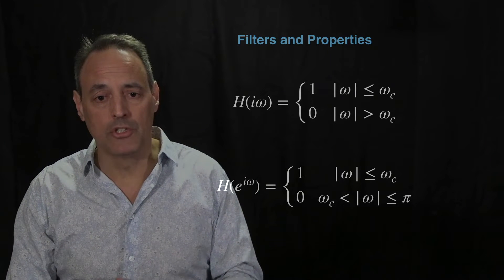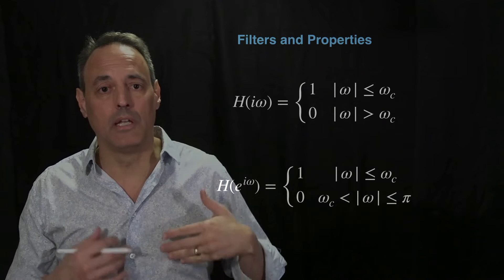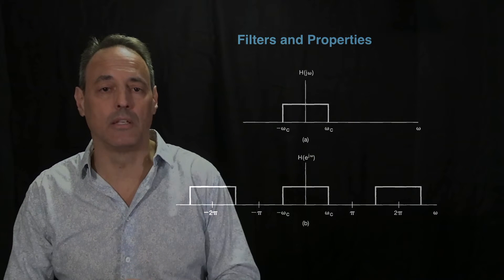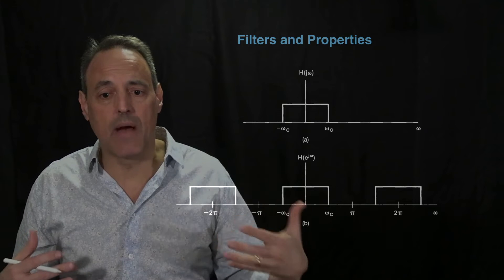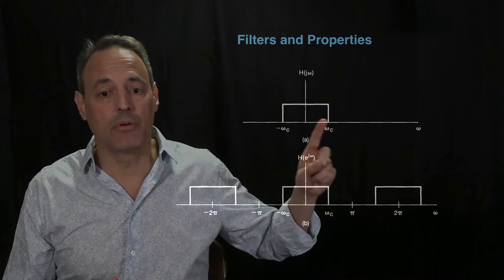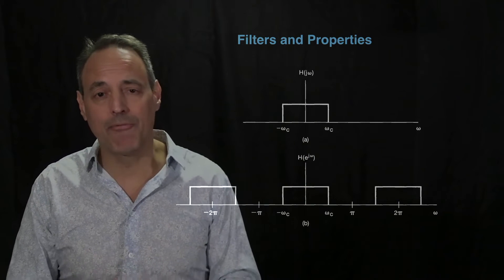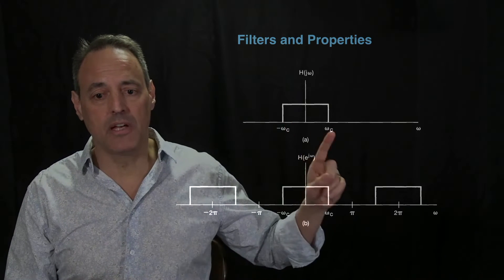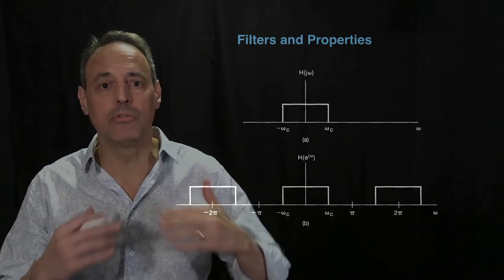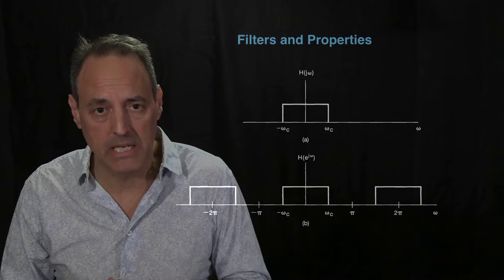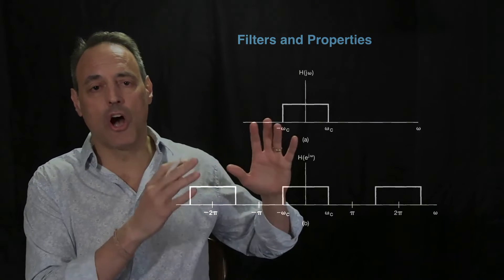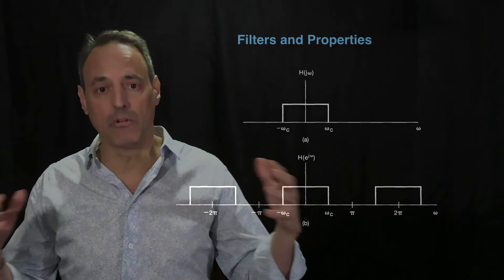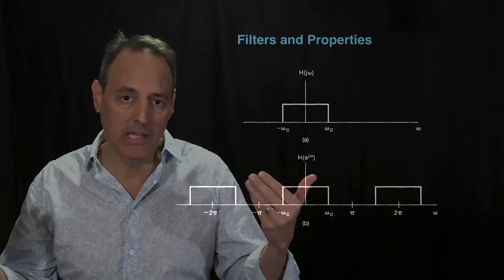Whereas the continuous case is infinite in frequencies, the discrete case lives on a domain from negative π to π. These two filters are equivalent for the continuous and discrete case, and here are pictures of what they look like. These are ideal filters in the sense that you can pull out all frequencies in a band perfectly — except that when you apply this kind of notch filter with a sharp cutoff at the edges, it produces an effect we won't find advantageous, because chopping a signal with square edges produces oscillations.